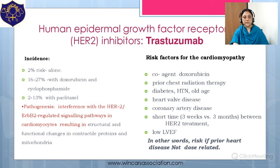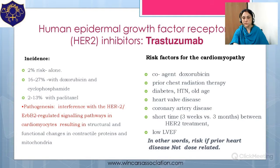Coming to Herceptin, the incidence is high — around 2% when used alone, and around 16 to 27% when used with paclitaxel. Interference with the HER2-related pathway is the underlying pathogenesis. Risk factors for cardiomyopathy with Herceptin include prior chest radiation therapy, co-agents such as doxorubicin, diabetes, hypertension, old age, presence of heart valve disease, coronary artery disease, low baseline ejection fraction, and shorter treatment intervals between doses. In other words, cardiomyopathy results mainly when there is prior heart disease, and this is not dose-related.